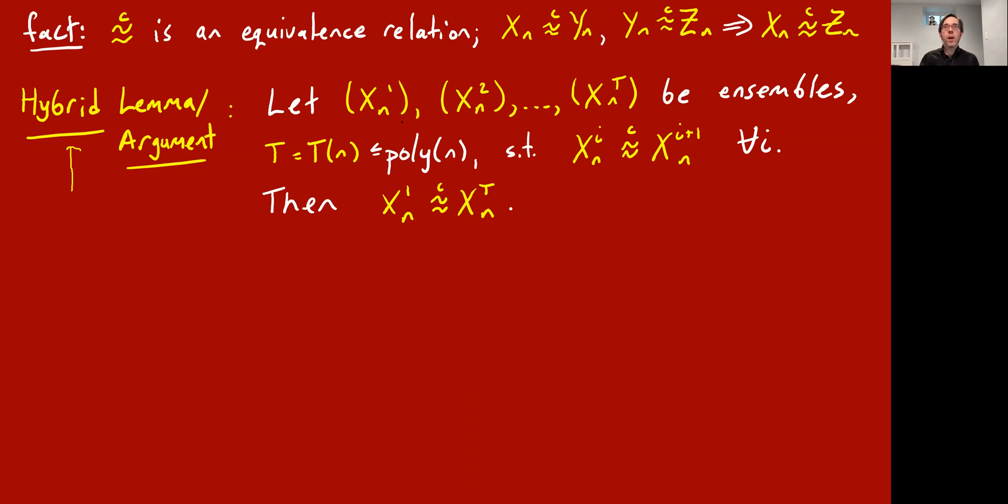And this fact is a workhorse fact in cryptography theory. And it goes by the name hybrid argument or hybrid lemma. And it says, let's say you have quite a few ensembles of random strings, X1 through XT. And T can even depend on N, but it should be at most polynomial in N. So you might have N squared different ensembles, for example. And suppose you know that any two adjacent ones, like XI and XI plus 1, are computationally indistinguishable. Then even the first one, X1, and the last one, XT, are also computationally indistinguishable. Now let's just see the proof of this.